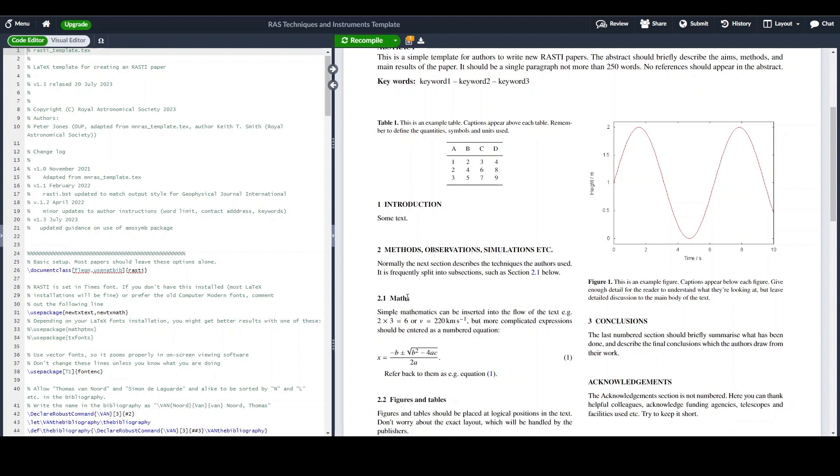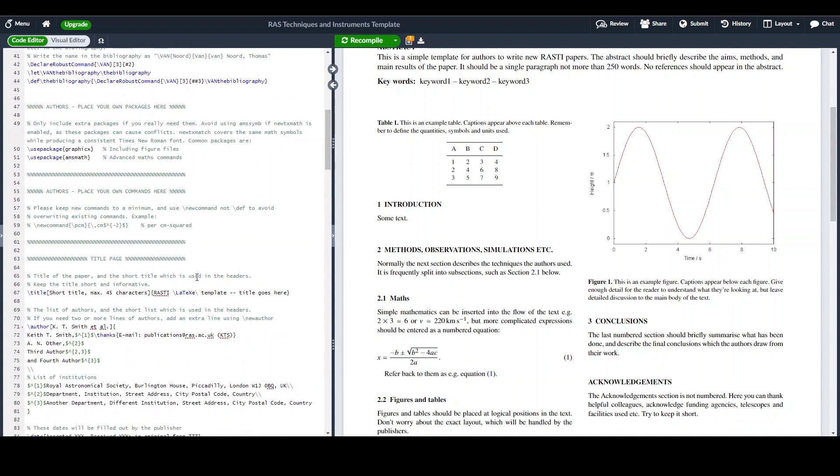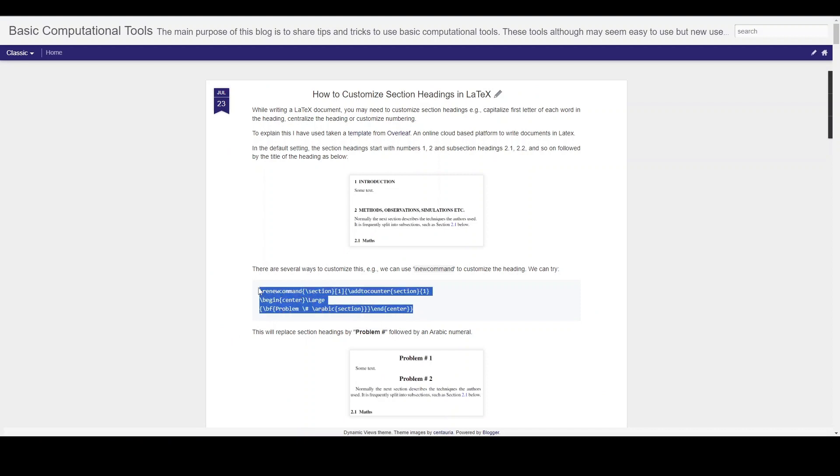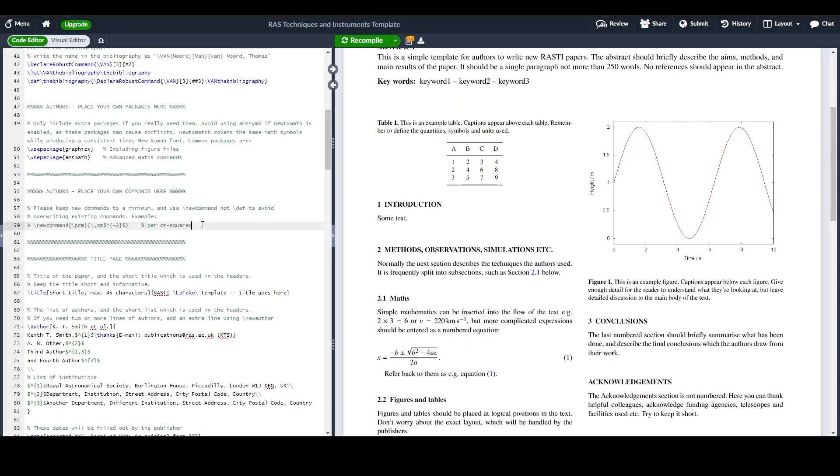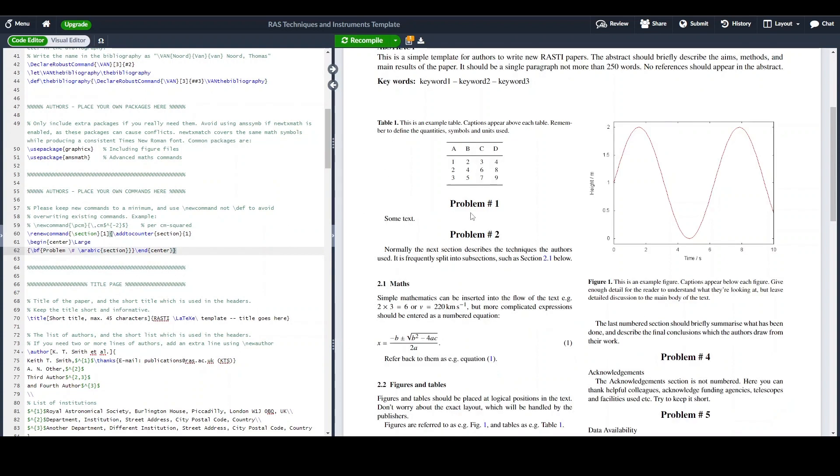One way is to use renew command in LaTeX as we are used to. And let's try that first. For example, I can just take this example and add this renew command here. What it's going to do is, it's going to replace the title of the section headings with problem number followed by a hash sign and then some Arabic number. So if I compile this, you can see the section headings have been changed by problem number one to problem number two and so on.